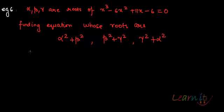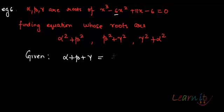What is given to us? Alpha, beta, gamma are roots of a cubic equation. So the relationship between the roots and the coefficients gives us that α + β + γ = 6, and αβγ = 6. Let's call this equation number 1.